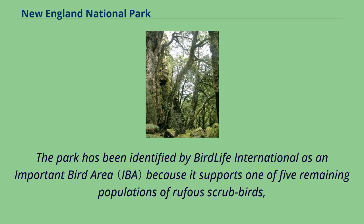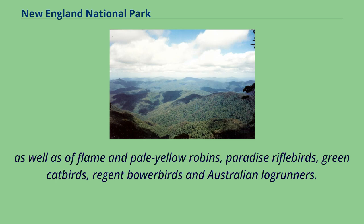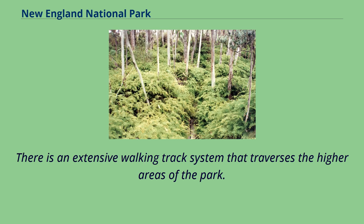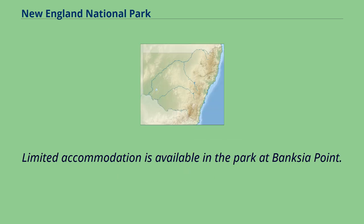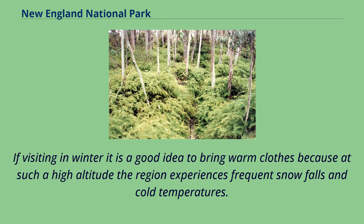The park has been identified by BirdLife International as an important bird area because it supports one of five remaining populations of rufous scrubbirds, as well as flame and pale yellow robins, paradise riflebirds, green catbirds, regent bowerbirds and Australian logrunners. There is an extensive walking track system that traverses the higher areas of the park, and limited accommodation is available at Banksia Point. If visiting in winter, it is a good idea to bring warm clothes, as the high altitude means frequent snowfalls and cold temperatures.